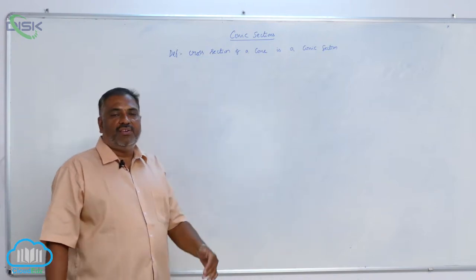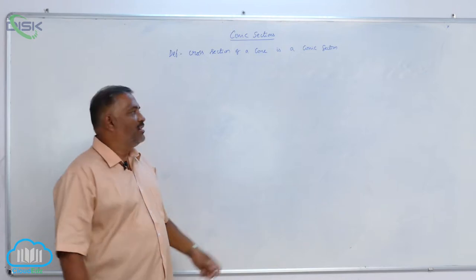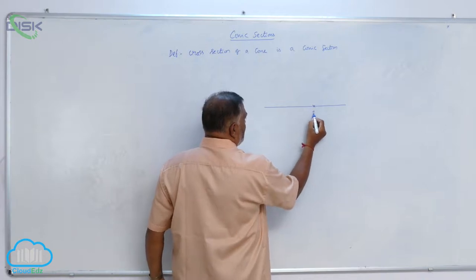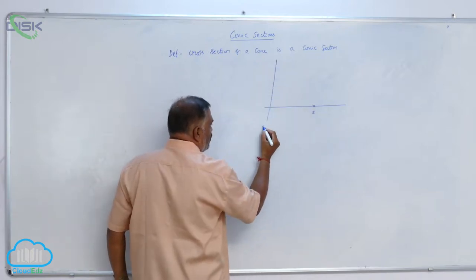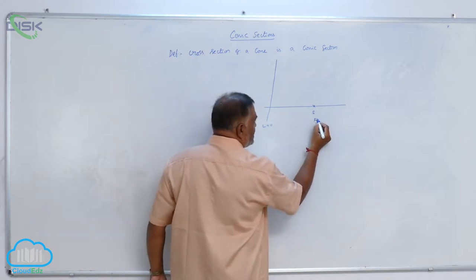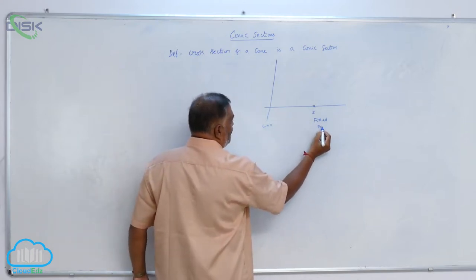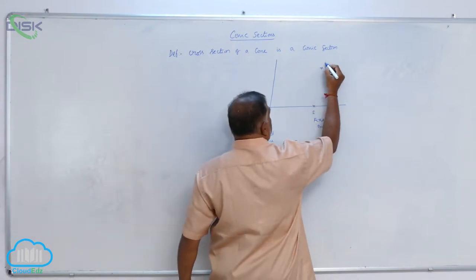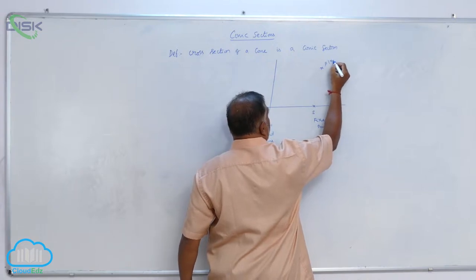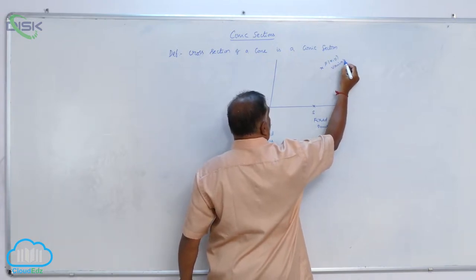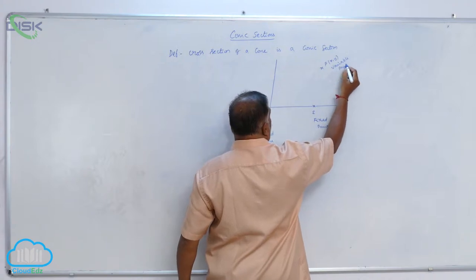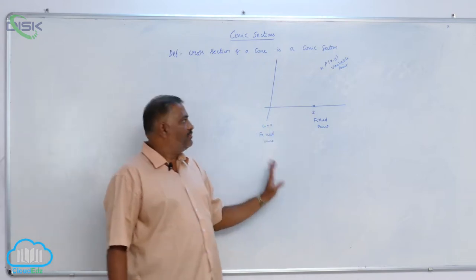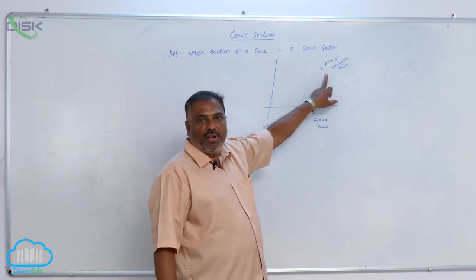Let us derive the definition of conic. Now, let us consider S is a fixed point, L equals 0 is a fixed line. P is a variable point, x comma y. I repeat once again. Let S be the fixed point, L equal to 0 is the fixed line, P is a variable point.